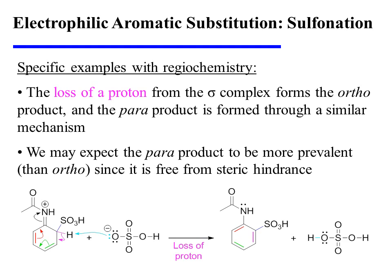The reaction concludes with the loss of a proton from the only ring carbon of the sigma complex that is sp3 hybridized. This restores aromaticity to the ring and forms the ortho-substituted product. The para-product is formed through a very similar mechanism, and we may expect the para-product to be more prevalent than ortho because it is free from steric hindrance.